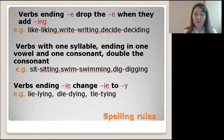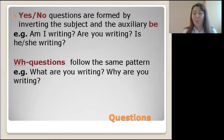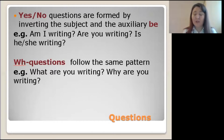These verbs end in 'ie,' and when we form the -ing form for such verbs, we change 'ie' to 'y' and then add -ing. How can we form questions in the Present Continuous? Yes/no questions are formed by inverting the subject and the auxiliary 'be': 'Am I writing?' 'Are you writing?' 'Is he/she writing?' The auxiliary verb 'be' is inverted and put at the beginning of the question sentence.